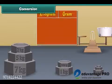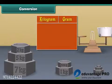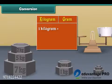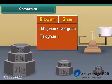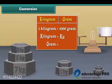The words kilogram and gram are used to express weight. One kilogram is equal to 1000 grams. Kilogram is also represented as kg, and gram is also represented as g.